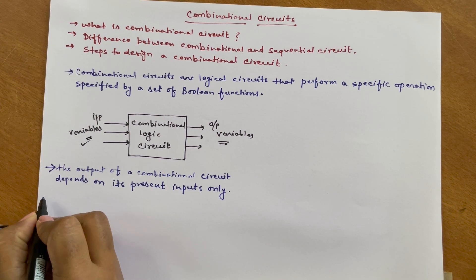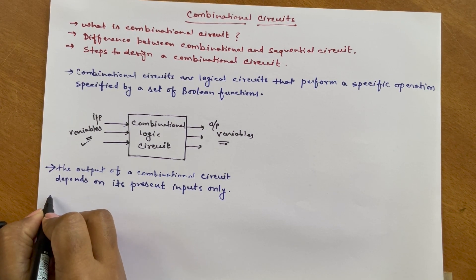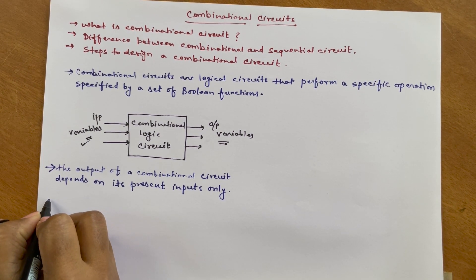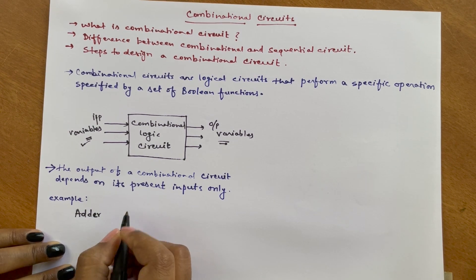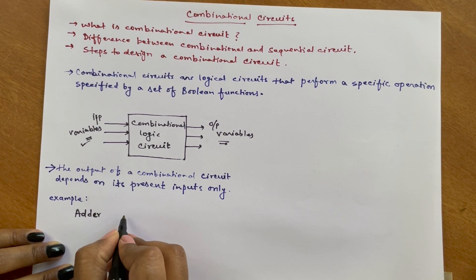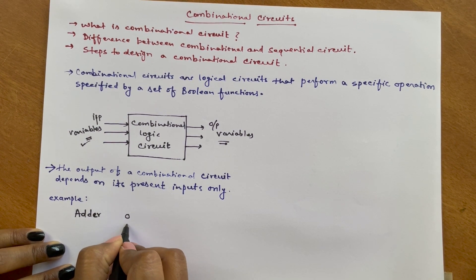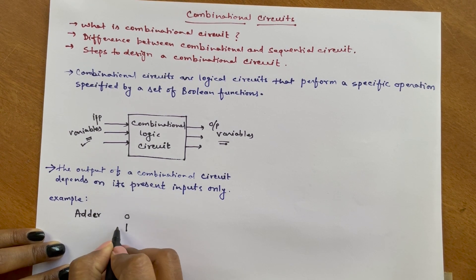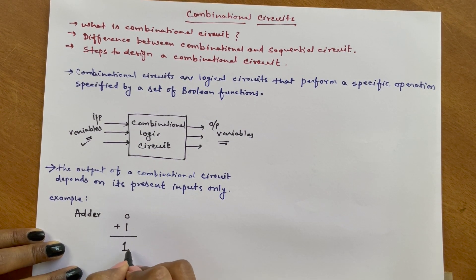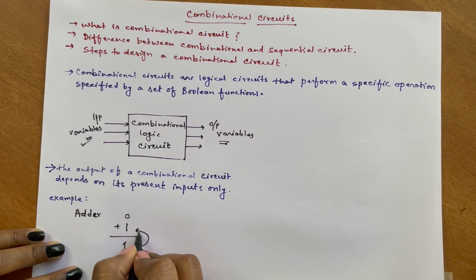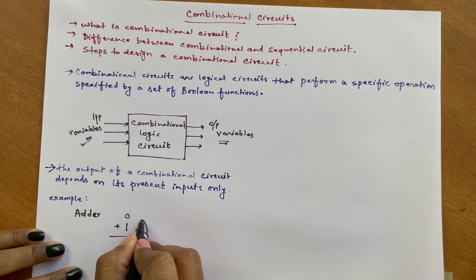An example of a combinational logic circuit is an adder. Suppose we are adding two digits, 0 and 1. The output will be 1, and this output depends on the present inputs only.